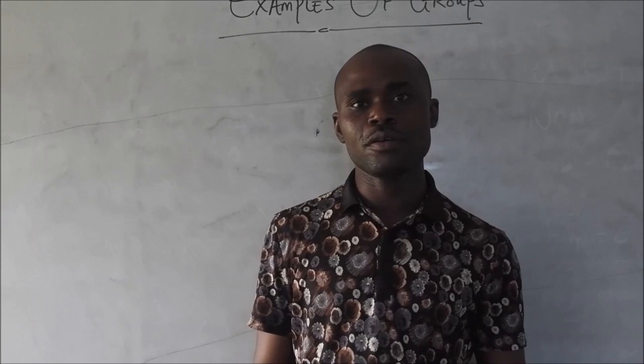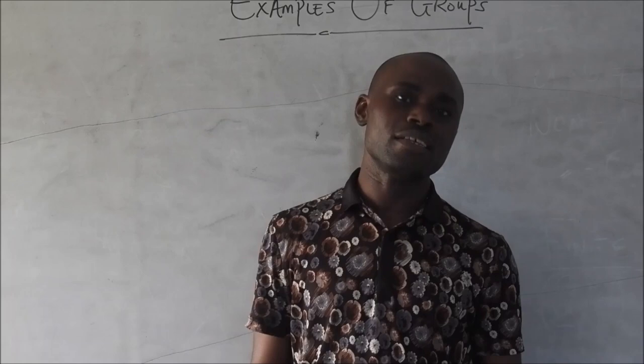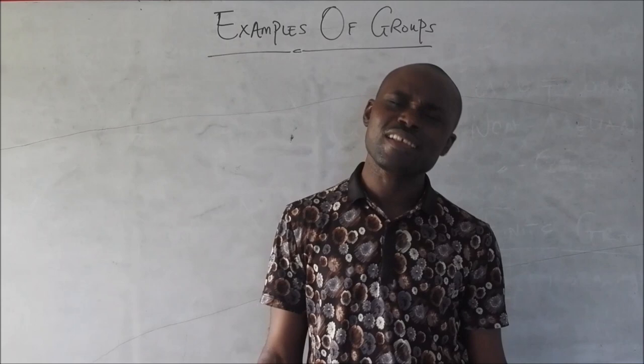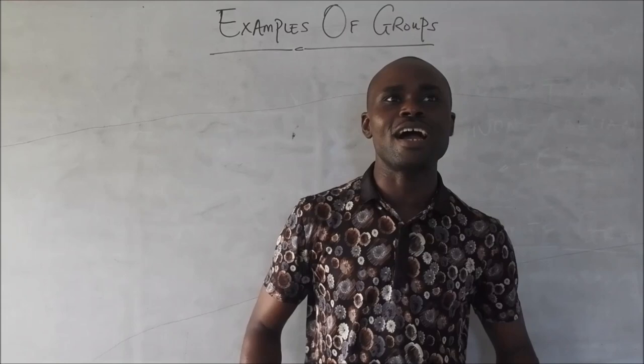Continuing our series on groups, we're talking about algebraic systems and structures. We've been talking about groups and discussed abelian groups. What I want to do now is bring it down to examples. So what I want to discuss today are examples of groups — we really need to know what these elements and groups are.